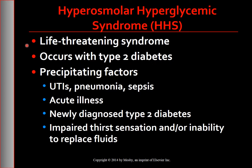HHS is less common than DKA. It often occurs in patients older than 60 years with type 2 diabetes. Common causes of HHS are UTIs (urinary tract infections), pneumonia, sepsis, any acute illness, and newly diagnosed type 2 diabetes.